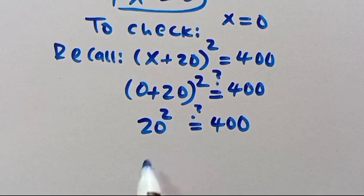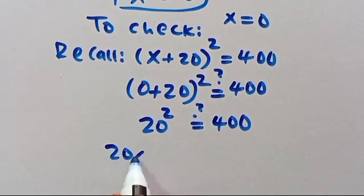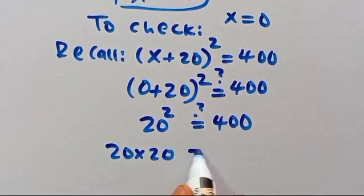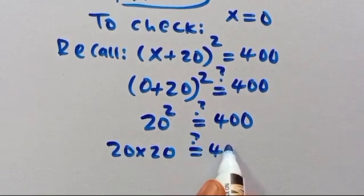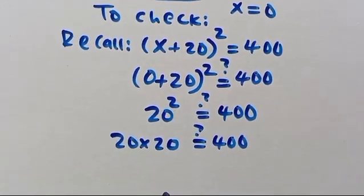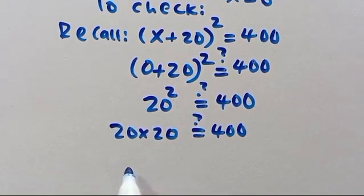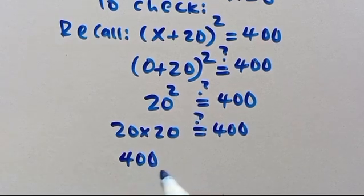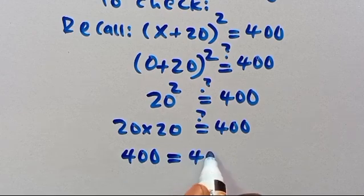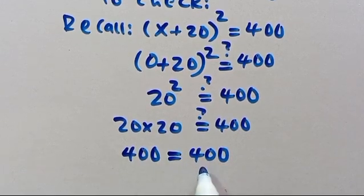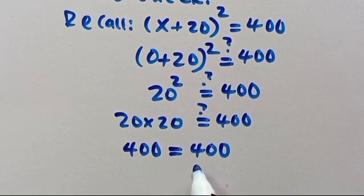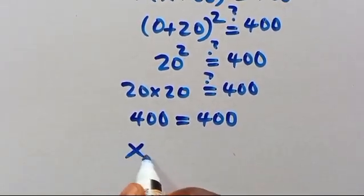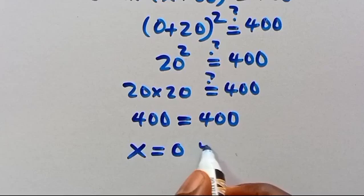Note that 20² means 20×20. 2×2 = 4 with two zeros gives us 400. Since the left-hand side equals the right-hand side, this implies x = 0 is correct.